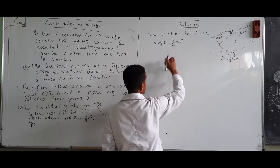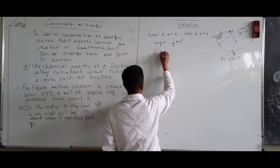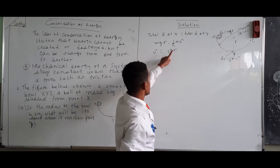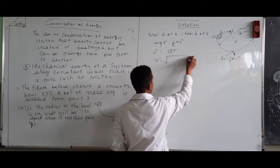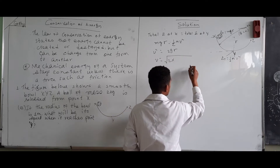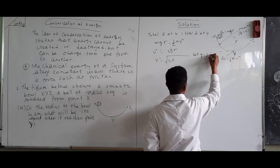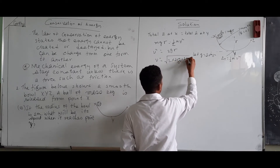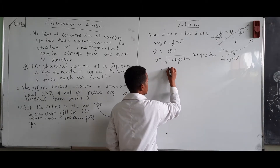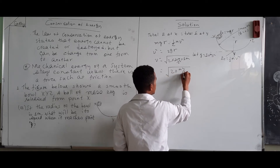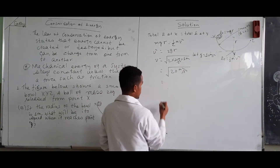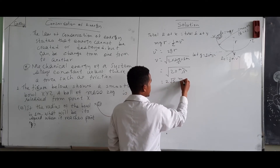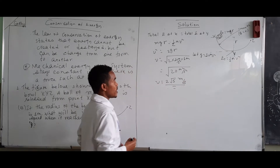Dividing both sides by M over 2, M will cancel, and we get V² = 2gR. Therefore V equals the square root of 2gR. Letting g equal 10 m/s², we get V = √(2 × 10 × 1) = √20 m²/s² = 2√5 m/s. This is the speed by which the ball reaches the lowest point Y.